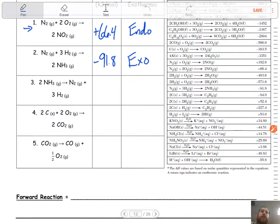So it's the reverse reaction. That means we have to flip or reverse the sign. So now it's positive 91.8, which means it now becomes an endothermic reaction.